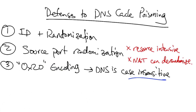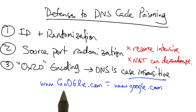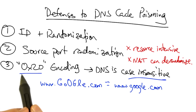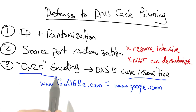Another defense is called the 0X20 encoding, which is based on the intuition that DNS matching and resolution is entirely case insensitive. So capitalization of individual letters in the domain name does not affect the answer that the resolver will return. This 0X20 bit — the bit that affects whether a particular character is capitalized or lowercase — can also be used to introduce additional entropy.